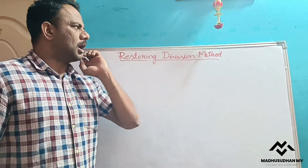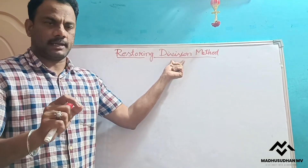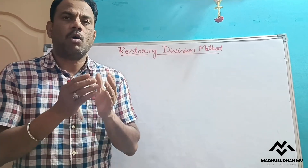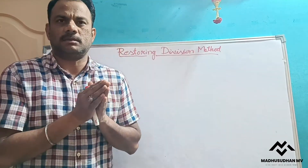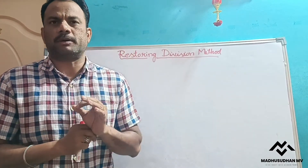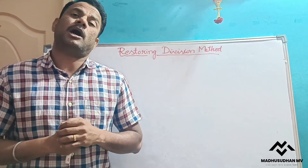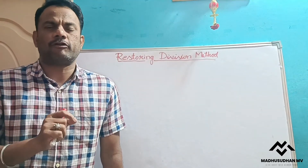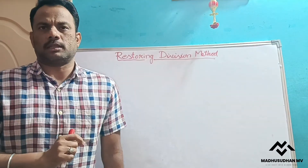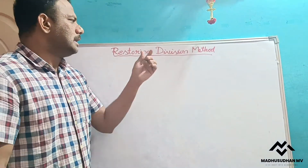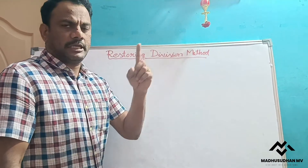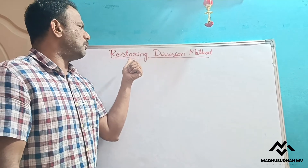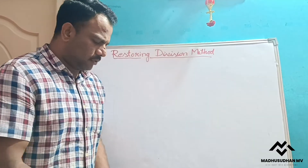In this video I am going to explain how to perform division operation in binary using the restoring method. In my previous videos I already explained how our ALU performs addition using carry-look-ahead logic, subtraction using two's complement, and multiplication using Booth's algorithm. Now we will discuss how the ALU performs division operation in binary. Division can be done in two ways: restoring method and non-restoring method. In this video I will explain the restoring division method.